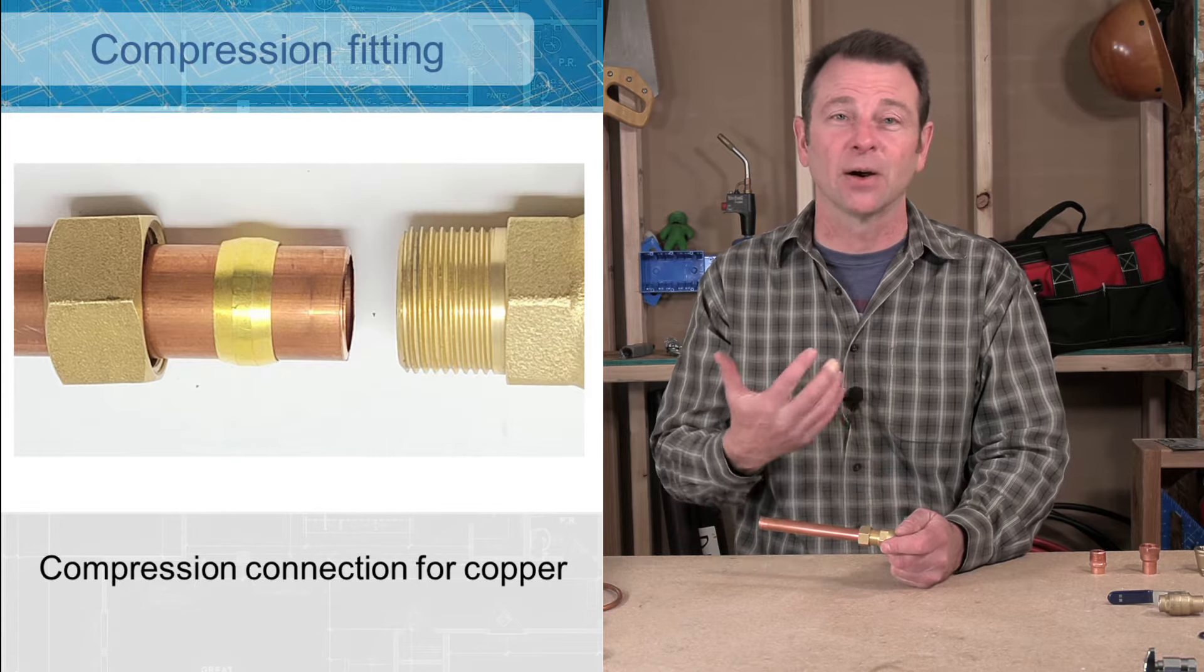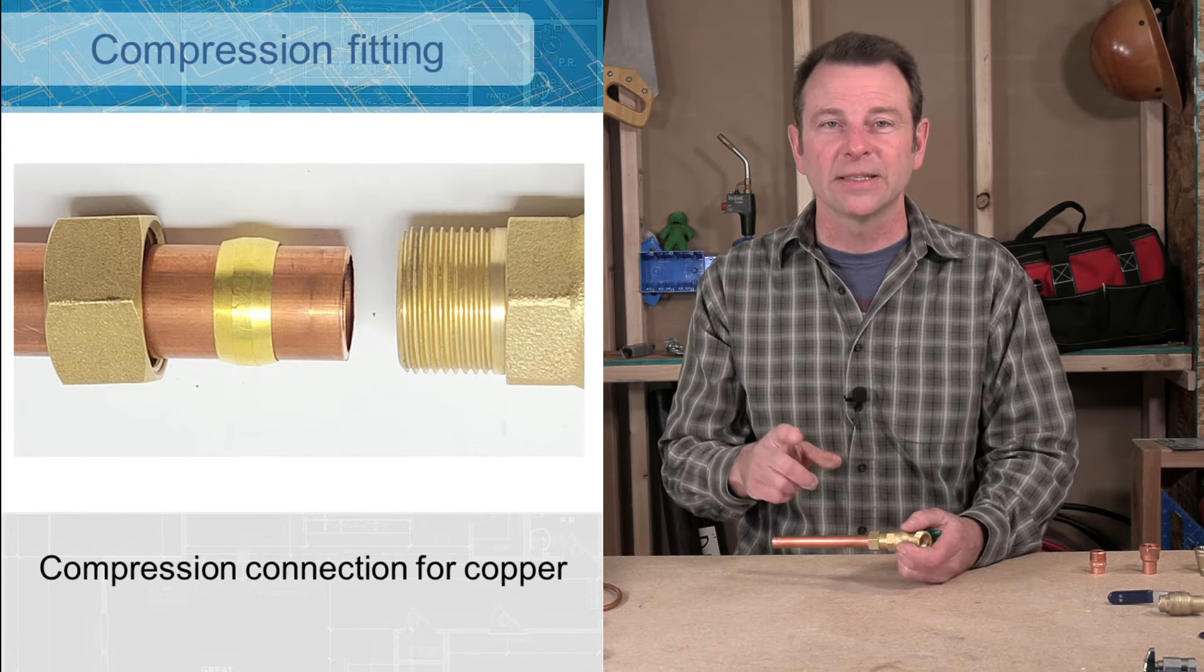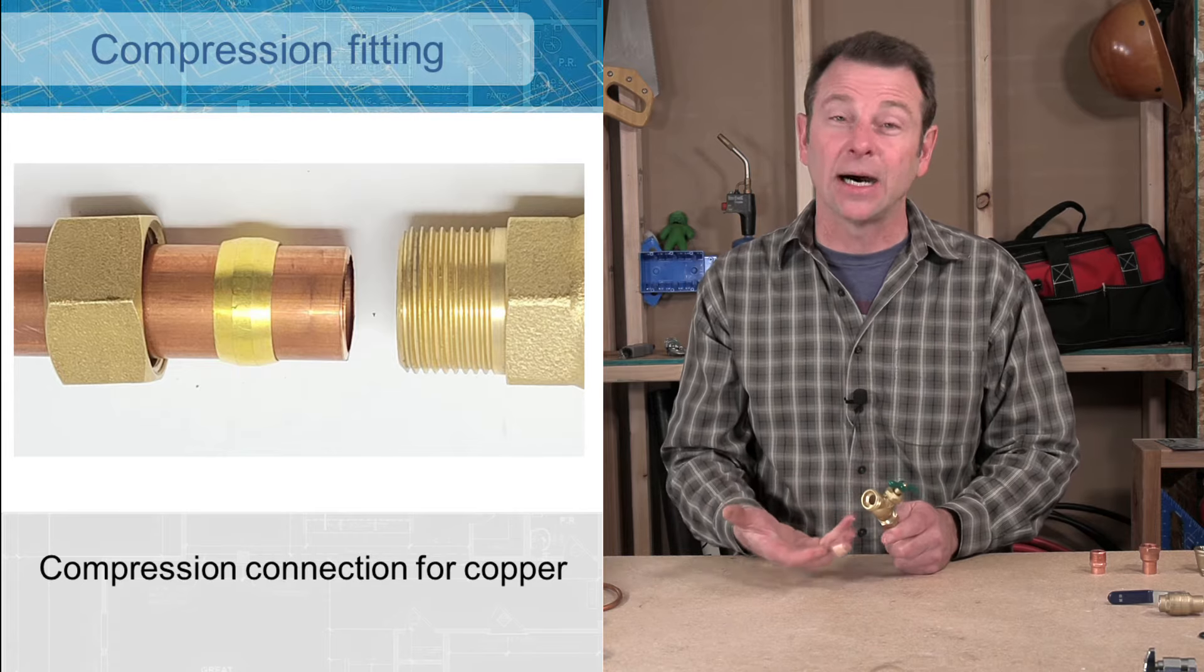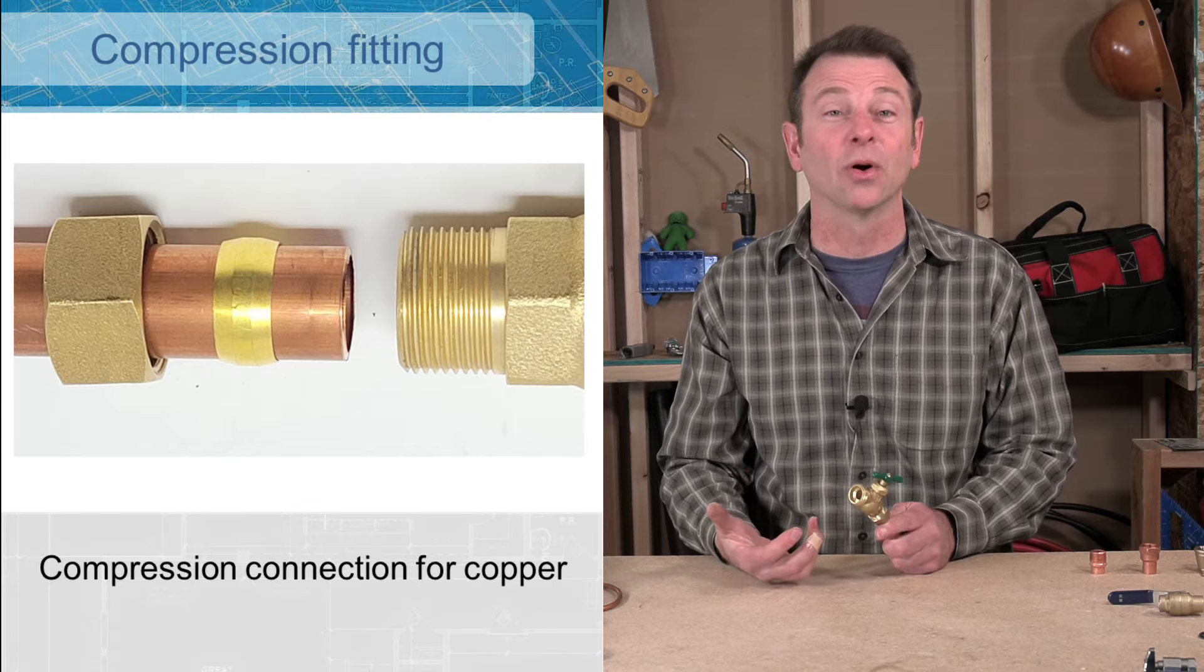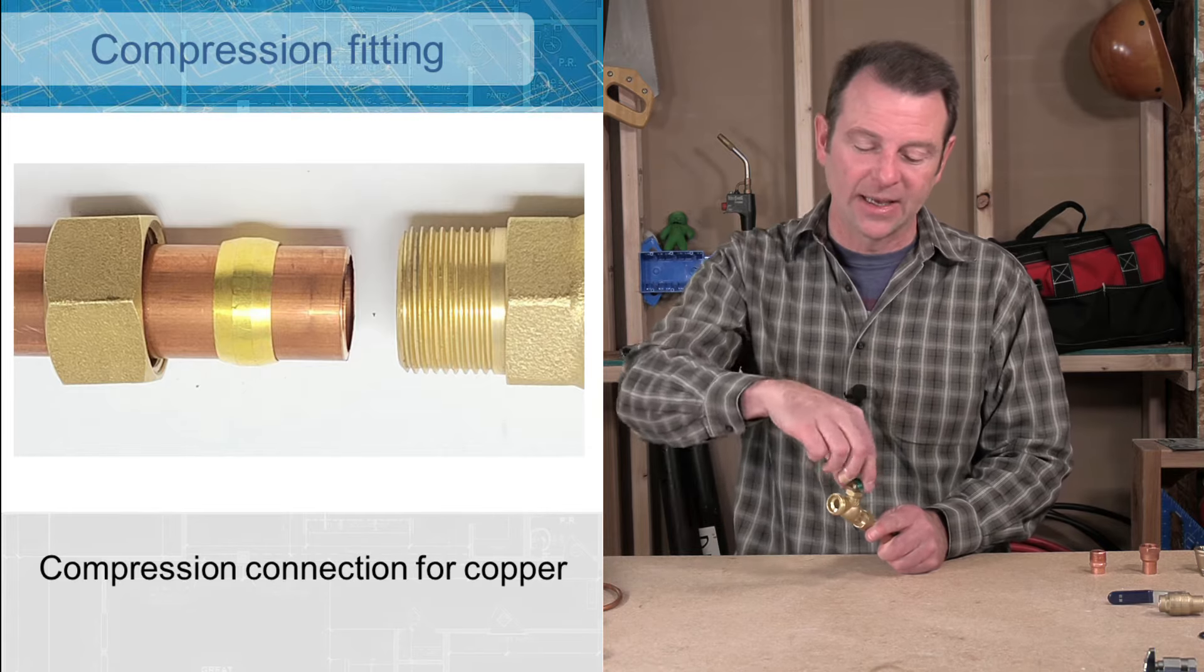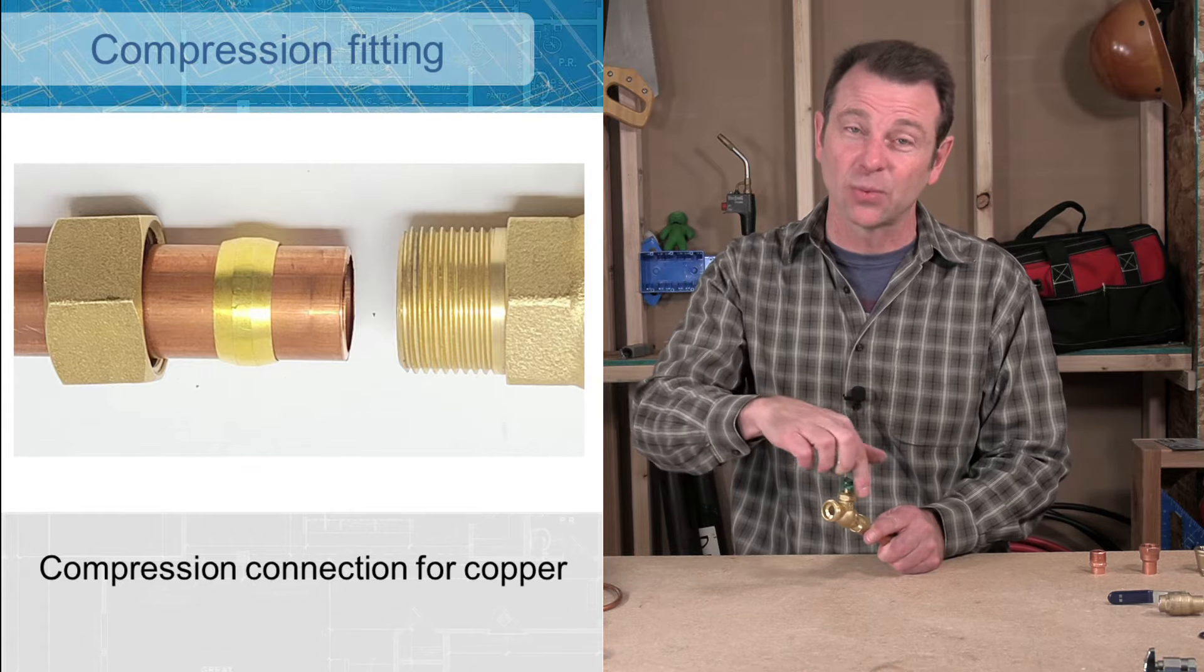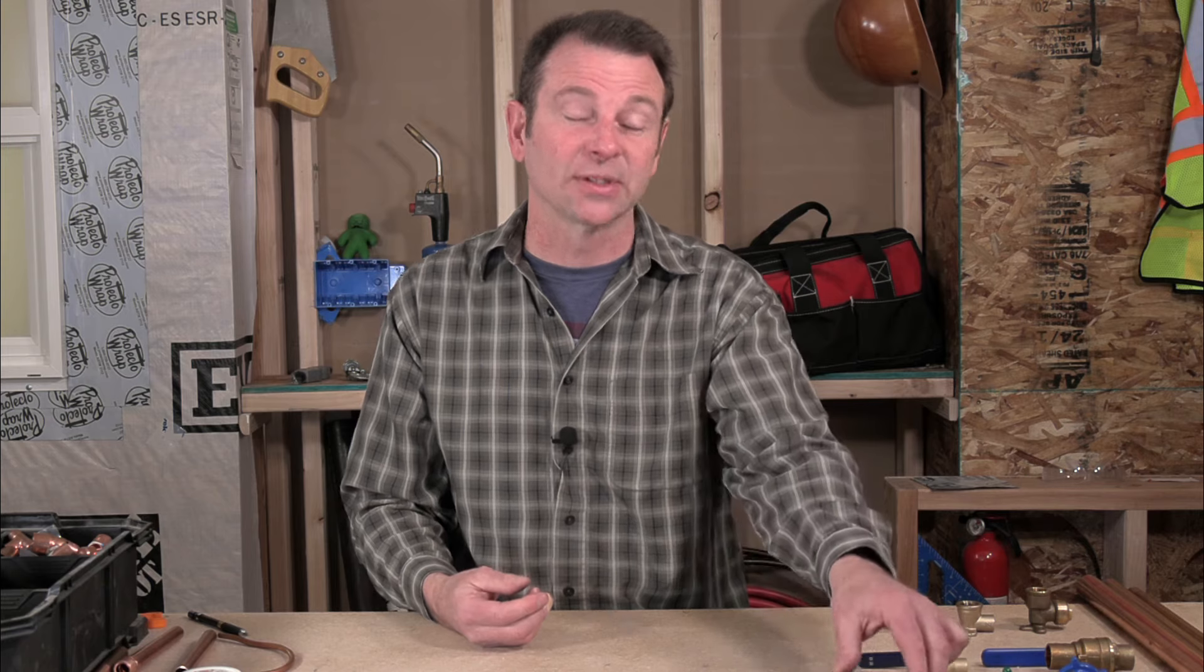So this compression fitting is attached to what's called a hose bib. This is a common part that you would see wherever you needed to connect, say a garden hose or a washer hose. They would thread onto this. We also have a valve up here, a stop valve that will open by twisting in this direction, several turns this way, will tighten it and close the flow of the water.